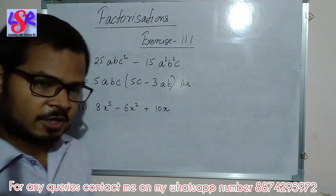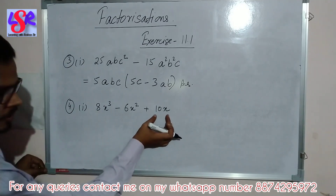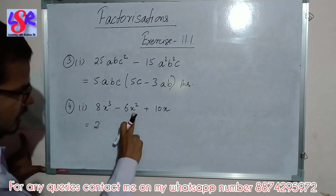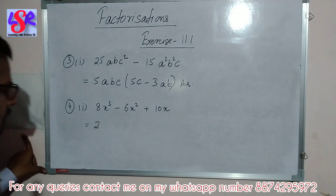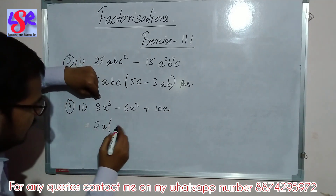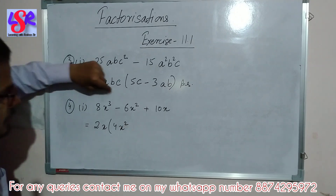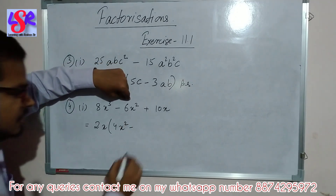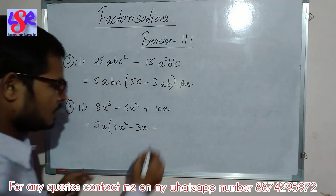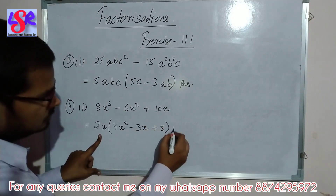Now question number 4, first part. In this one we are having 3 terms and we have to take common from all three. 8, 6, and the other term all come in the table of 2, so we can take 2 as common from the numbers. Here we are having 3x, here 2x, and here 1x, so at maximum we can take only 1x as common. In the table of 2 we get 8 at 4 times, so 4. Then x³; we have taken 1x, so x² is left. Then minus. In the table of 2 we get 6 at 3 times, so 3, and 1x is left because 2 was there and 1 is taken out. Then plus. In the table of 2 we get 10 at 5 times, so 5. x is taken out. So this is your answer.